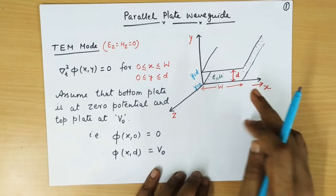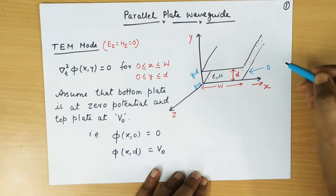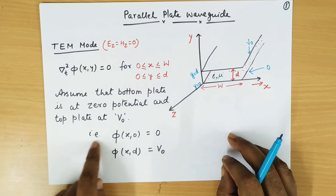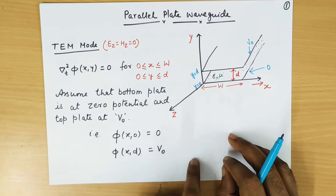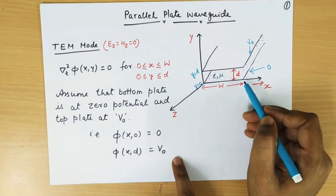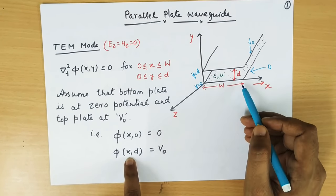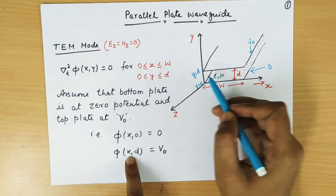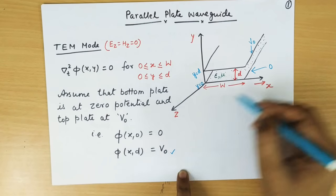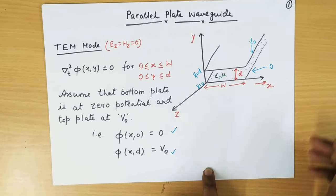Now let us assume that the bottom plate potential is 0 and the top plate potential is V0. The bottom plate potential phi(x,0) equals 0, because the bottom plate has the coordinate (x, 0) for any z, and similarly for the top plate the coordinate will be (x, D). So D is the y coordinate of the top plate, giving phi equal to V0. So the bottom plate is actually the ground.